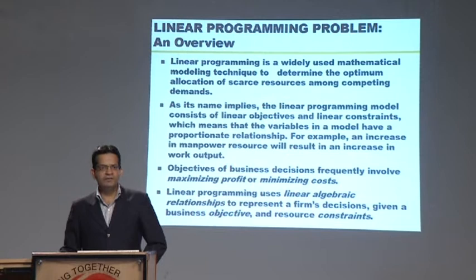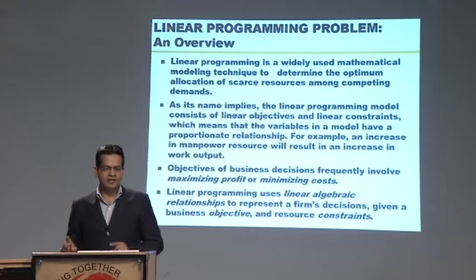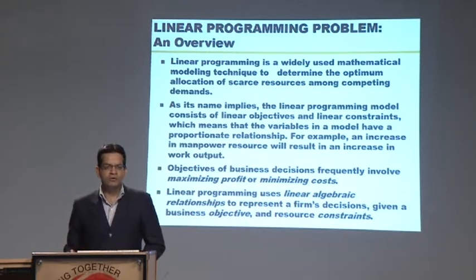For example, an increase or decrease in manpower will result in a proportionate increase or decrease in work output. So these two variables have a linear relationship. A LPP will have a linear objective function and linear constraints.